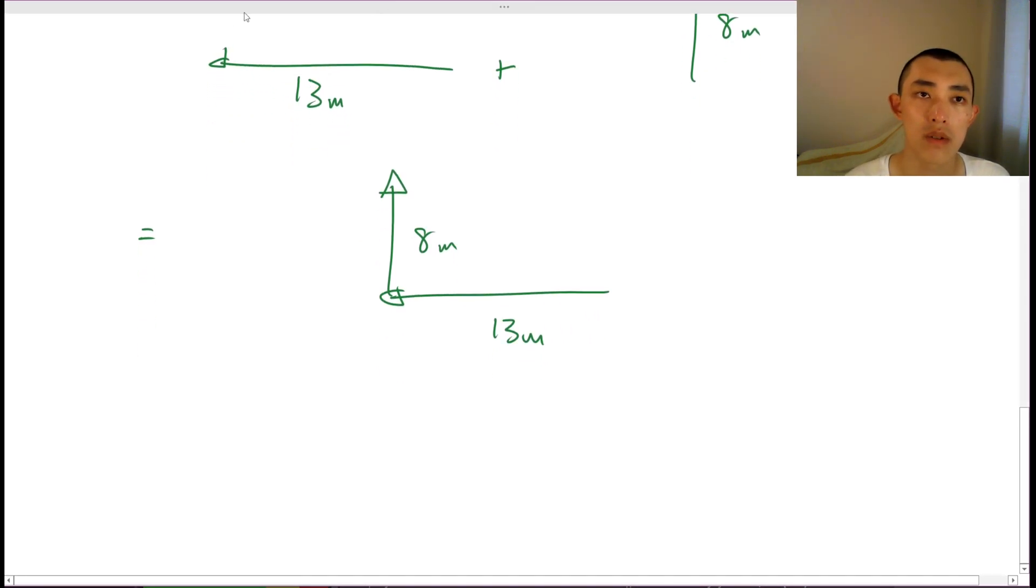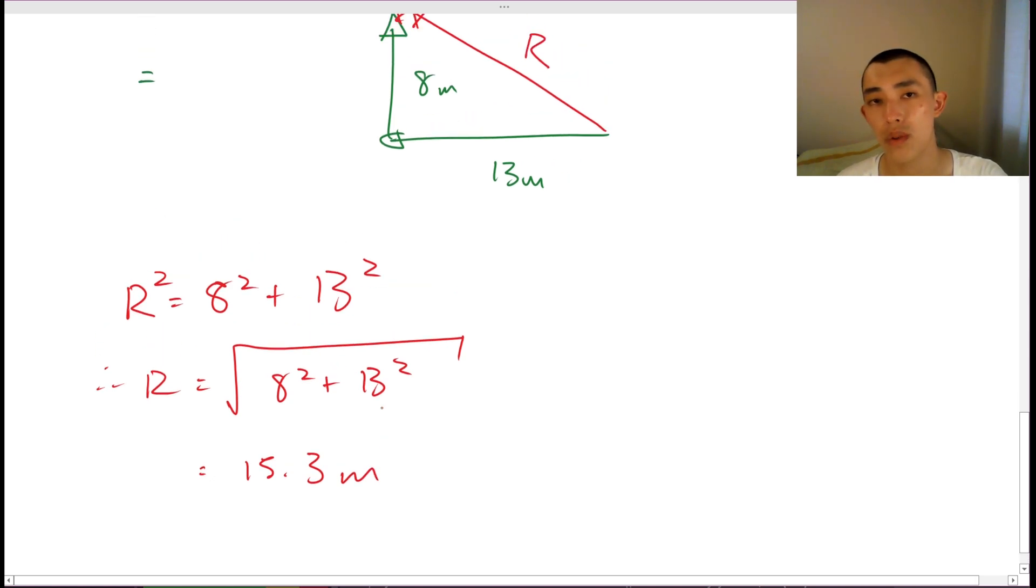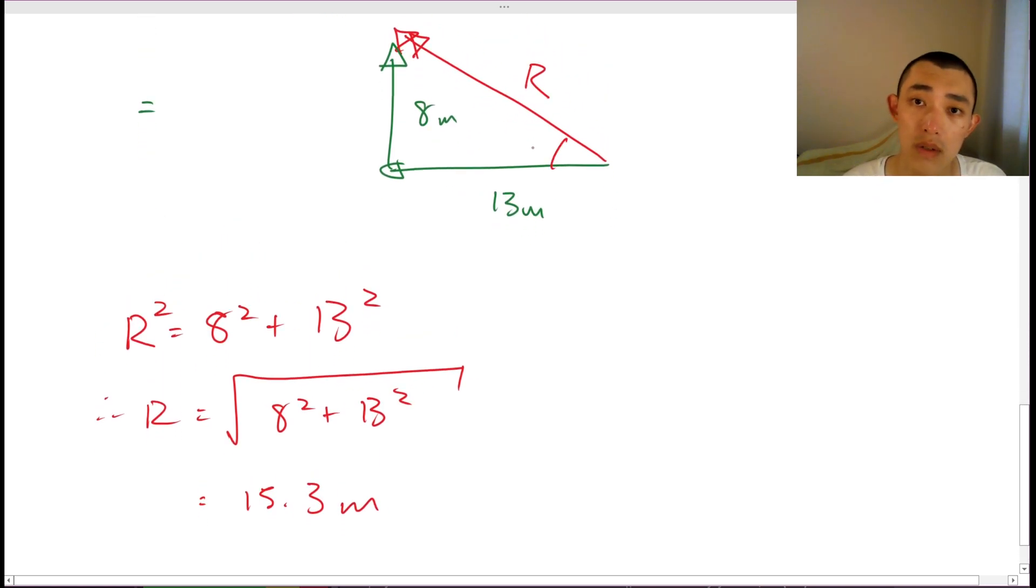And what does that mean? Well, I can now begin to draw on my resultant vector in red. Let's figure out what the length of r is. So again, r squared is equal to eight squared plus 13 squared. So therefore, r is equal to the square root of eight squared plus 13 squared, which is going to equal 15.3 meters. We can also determine what the angle theta is.